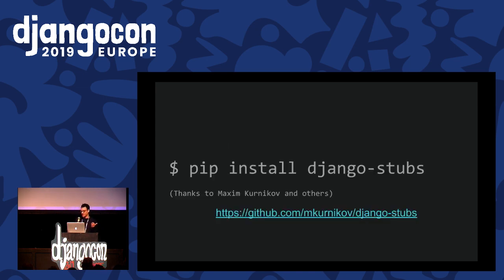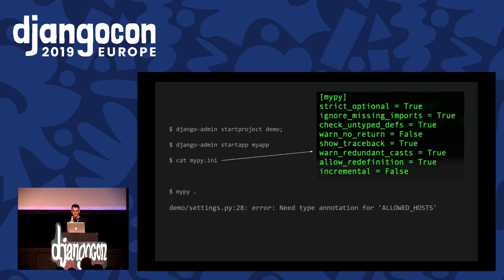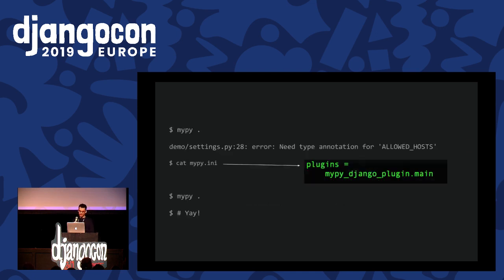But what if you want to type check your Django code? There are stub files which define the interface for all sorts of Django functions, classes, and so on. It's a project on GitHub by Maxim Kornikov and other contributors. You can just pip install it to your project. So let's say I made a Django project and I want to type check it with MyPy. I make a mypy.ini file, add some options, and then run it — and I get an error about needing some type annotation in the settings.